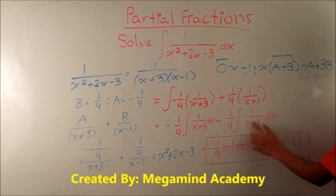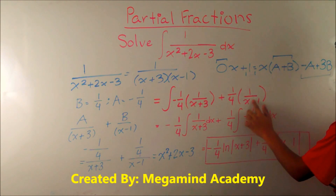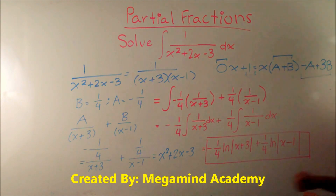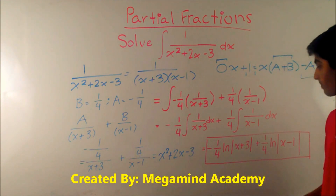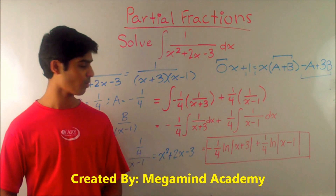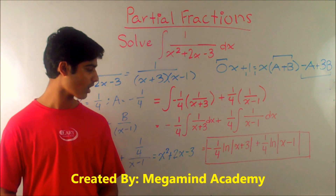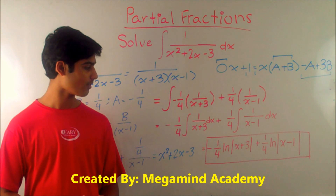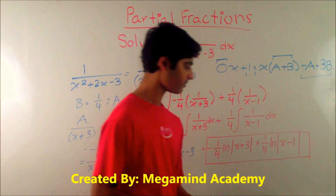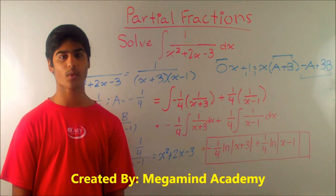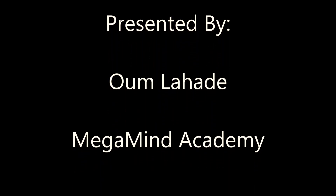Sorry — that last term should be x minus 1, because in the original fraction we had x minus 1. So the answer to this problem is negative 1 fourth times the natural log of the absolute value of x plus 3, plus 1 fourth times the natural log of the absolute value of x minus 1. Today we learned about partial fractions and calculus. Thank you for watching.